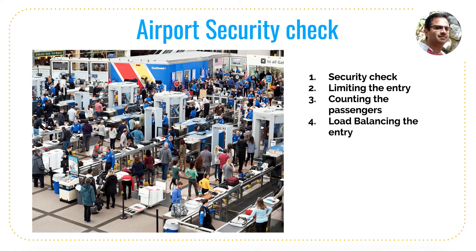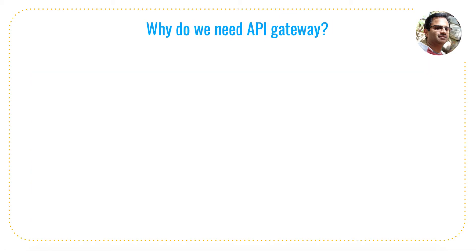The security checkpoint also does load balancing. For example, if you have a large number of passengers getting into the airport, they can be diverted to different security queues so the load gets balanced at one security checkpoint. The same thing is done by the API gateway.